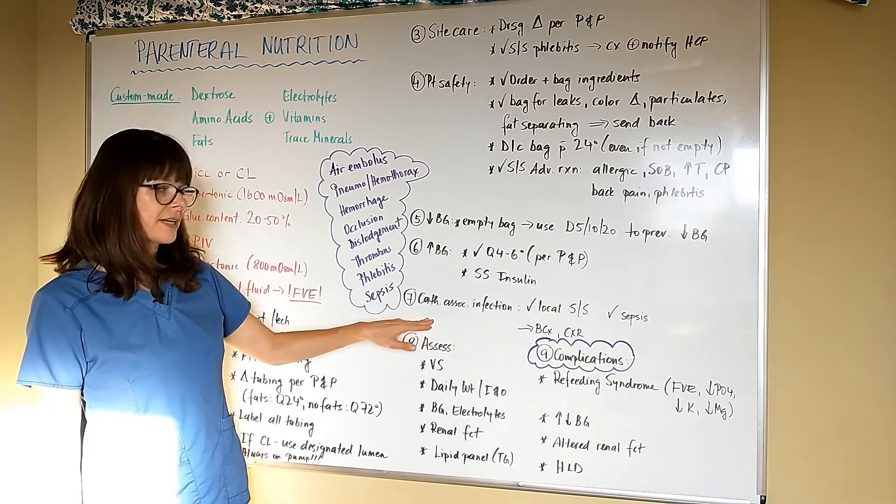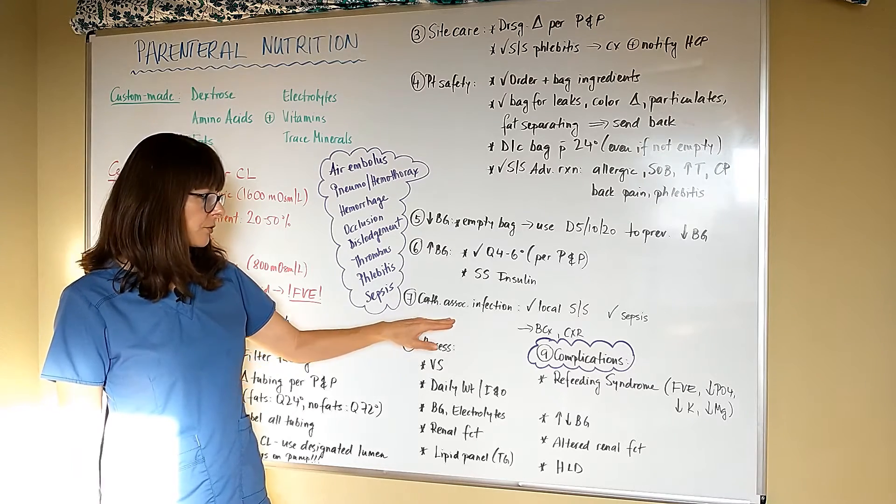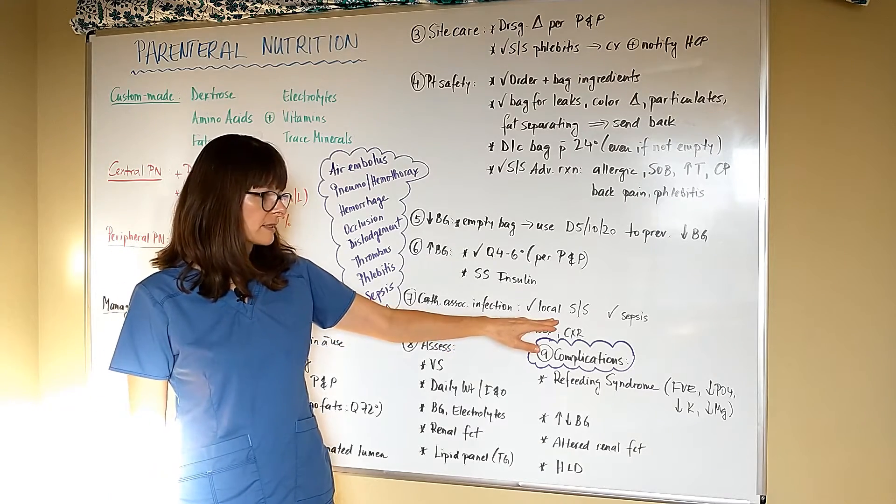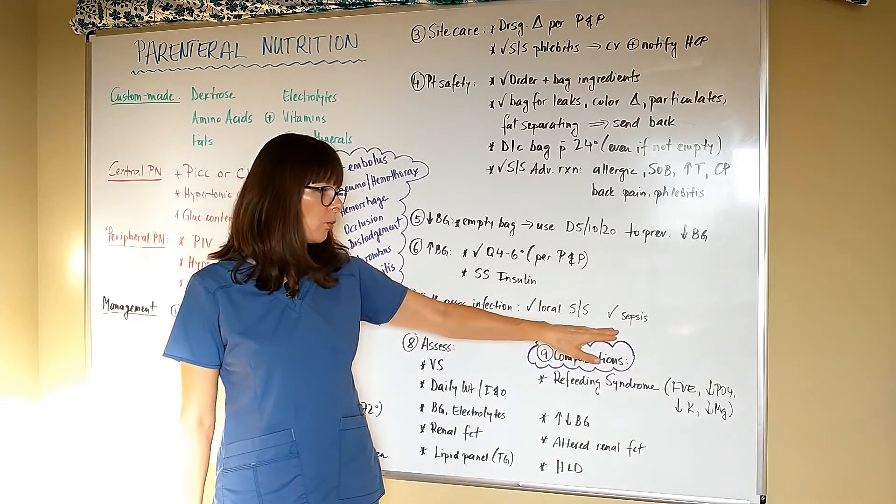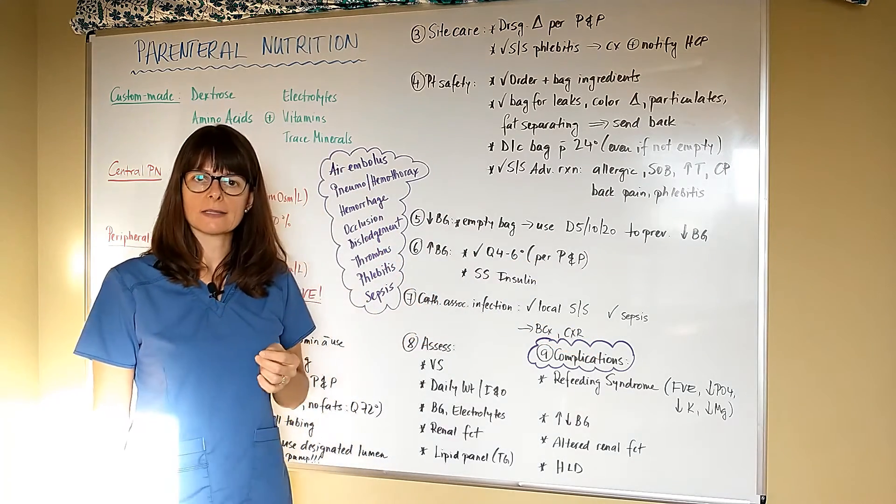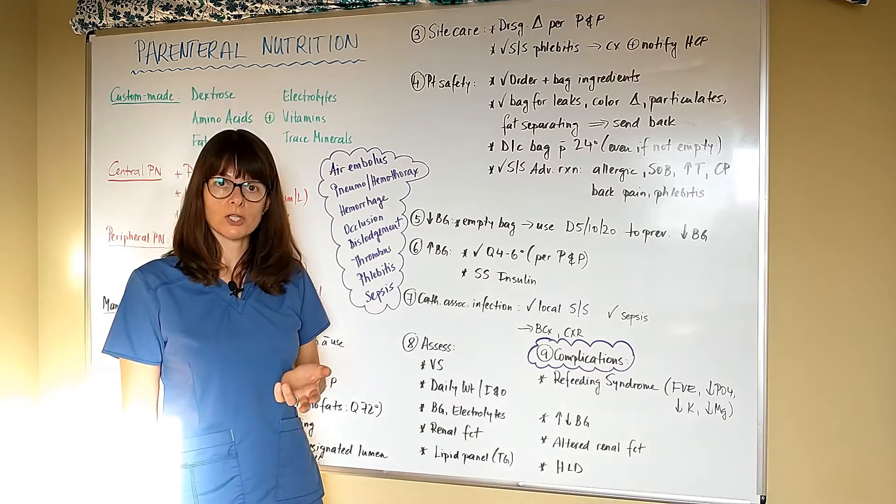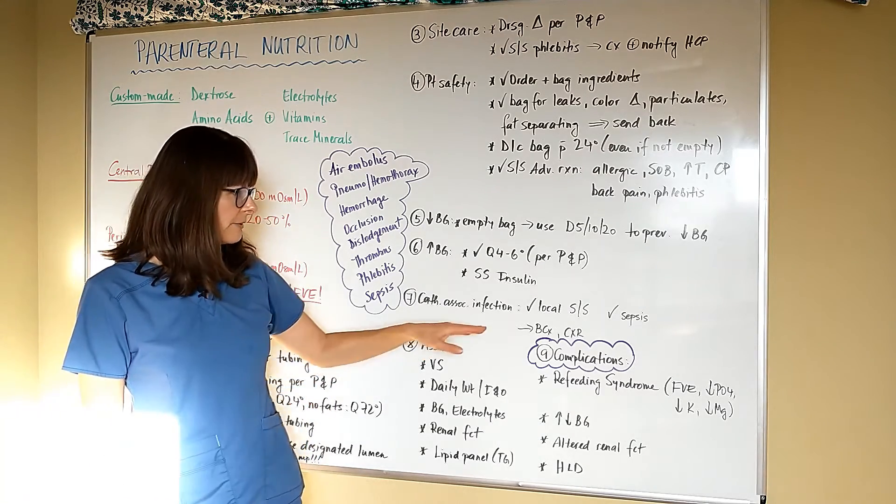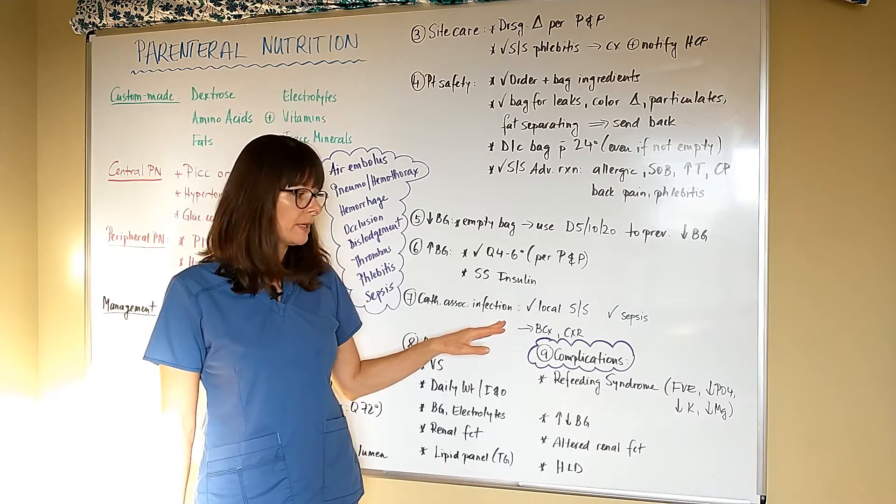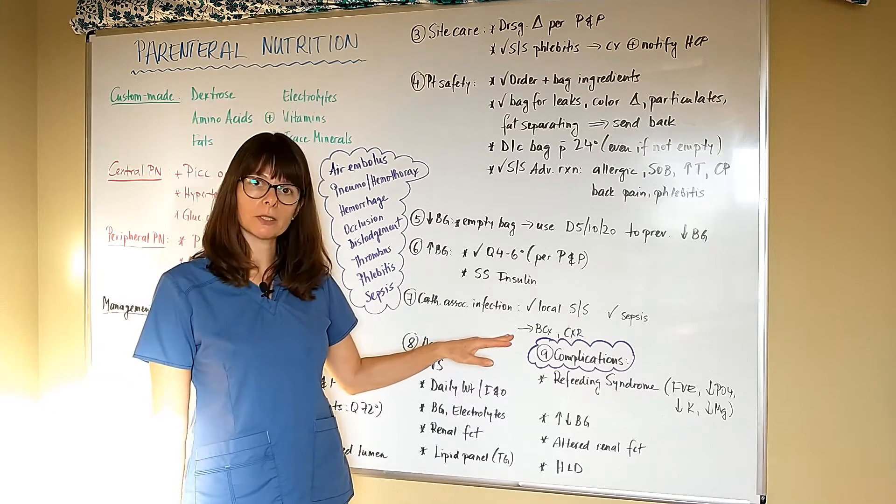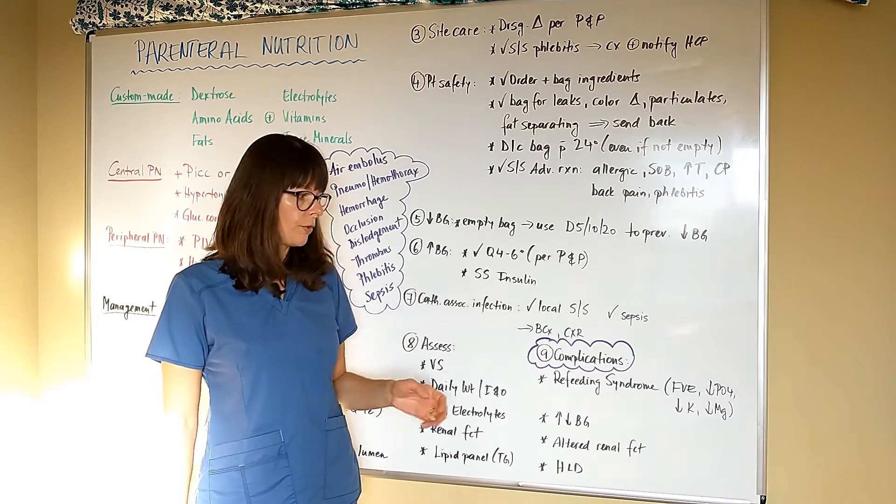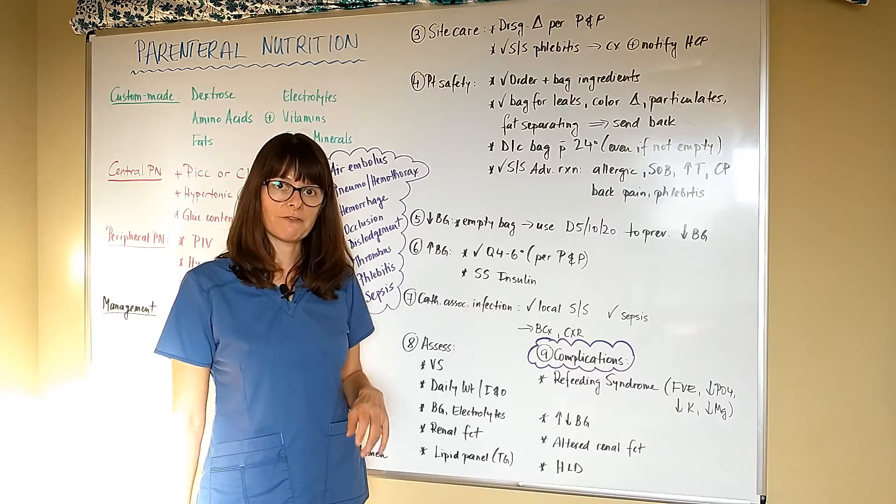Because we have a central line for the most part, catheter associated infections can certainly happen. We want to check locally for signs and symptoms of infection, as well as be very aware that the patient might turn septic because it is a direct access into the patient's bloodstream. Therefore, we need to watch out for those signs and symptoms. If we suspect any of these adverse reactions to be happening, then we should anticipate blood cultures and a chest x-ray to be ordered to check for any pulmonary changes from fluid volume overload, as well as check for bloodstream infections.